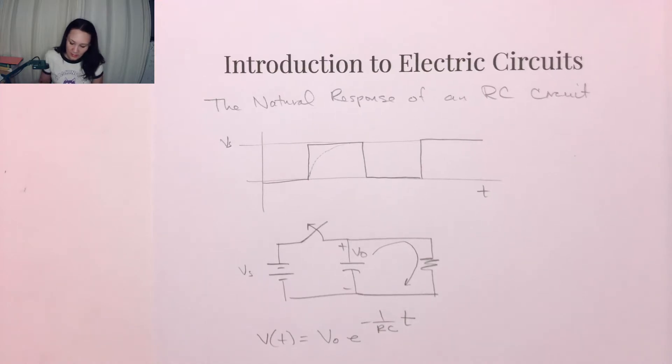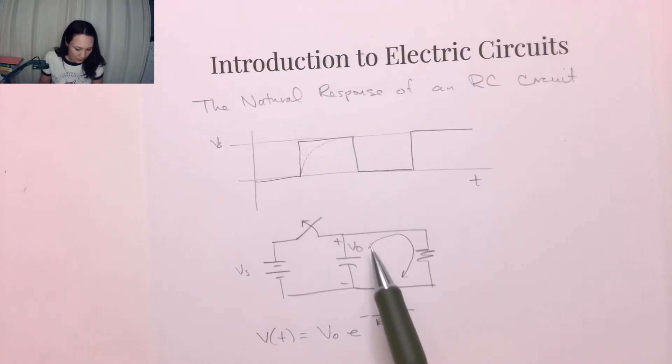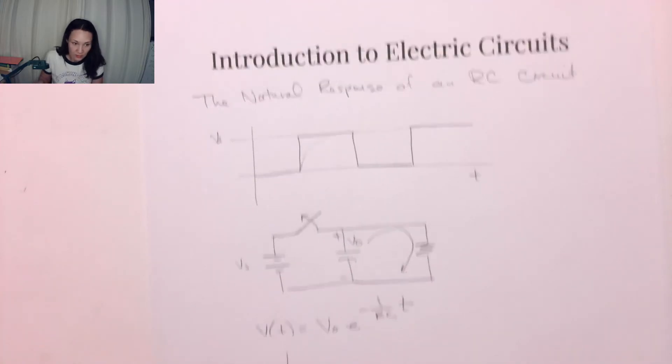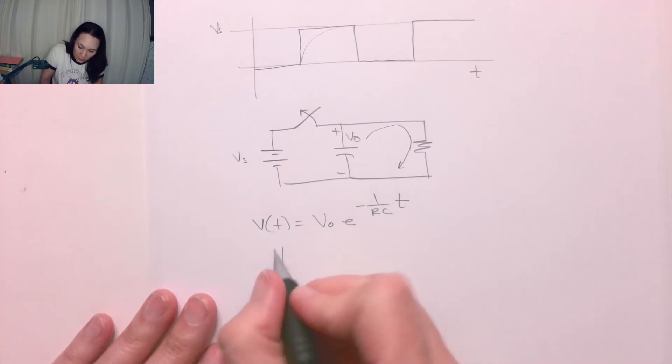This tells us that at t = 0, the voltage is the initial voltage stored on the capacitor. Then as time goes on, it decays as it discharges through the resistor.